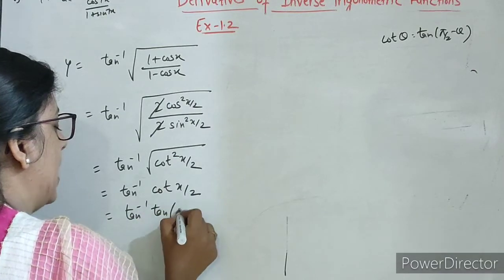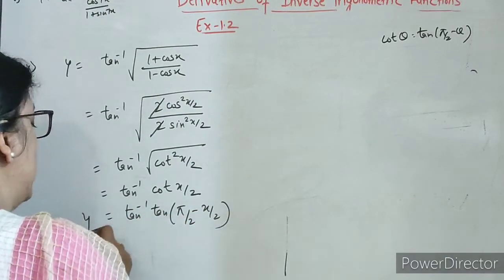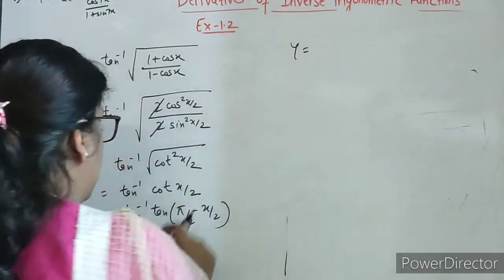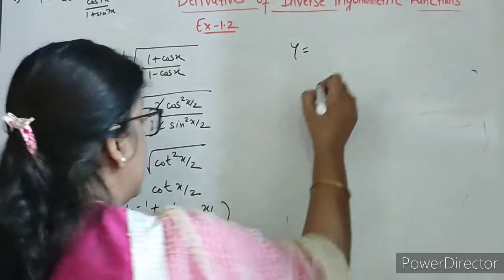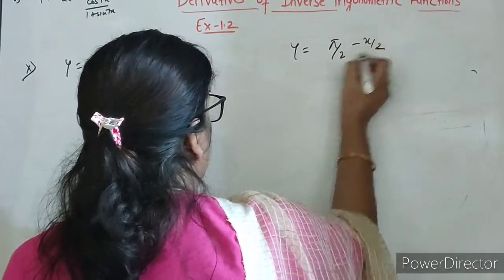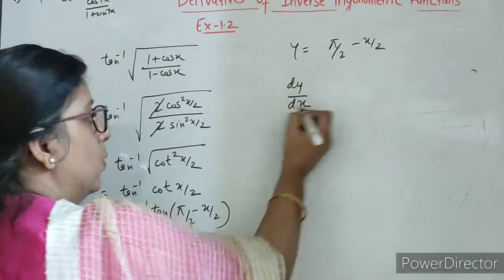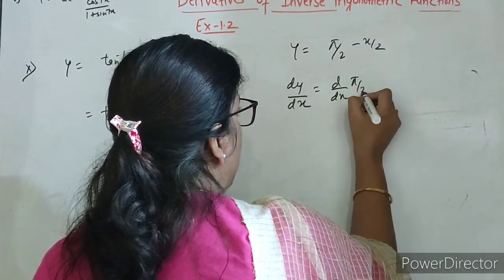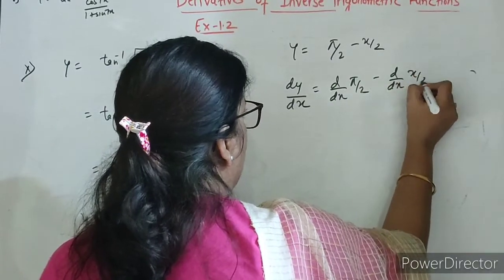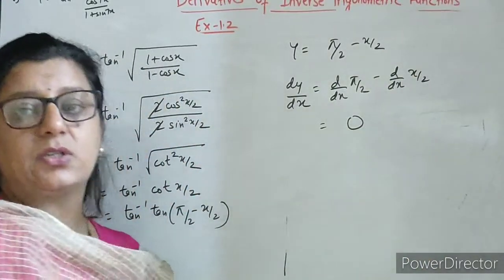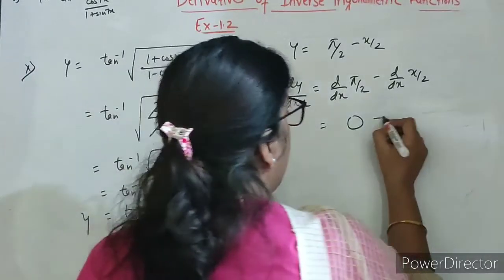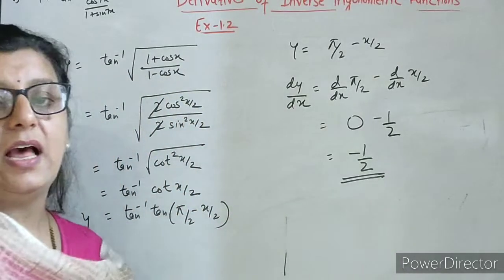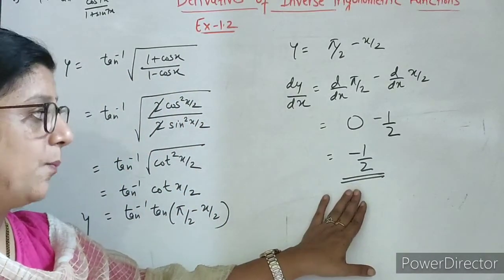Ab tan inverse ke saath cot aa raha hai, toh cot ko hameh change karna padega tan mein — pi by 2 minus theta. So this we can write as tan of pi by 2 minus x by 2. Property use karenge: tan inverse tan x is x. So yeh ho jayega pi by 2 minus x by 2. Now differentiating: dy by dx equals d by dx of pi by 2 minus d by dx of x by 2. Pi by 2 is constant, derivative 0. x by 2 ka derivative 1 upon 2. Final answer is minus 1 upon 2.